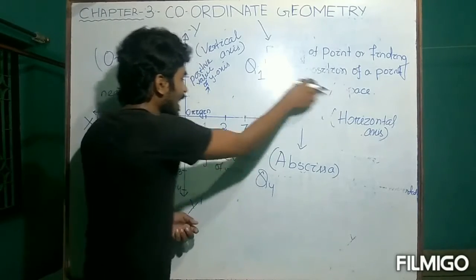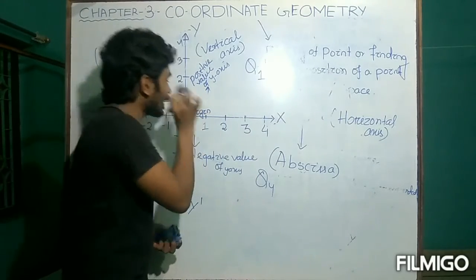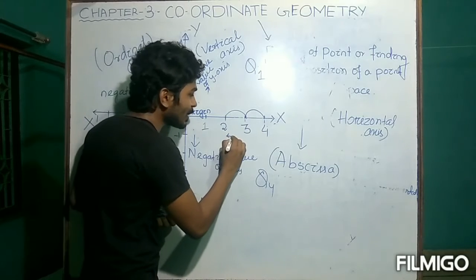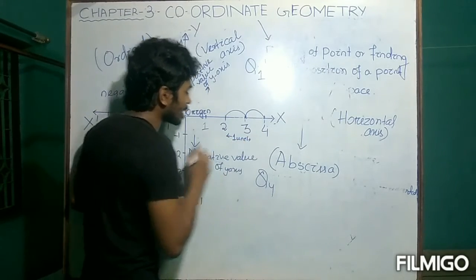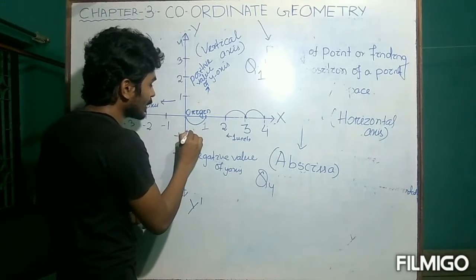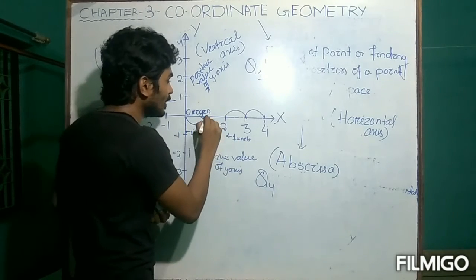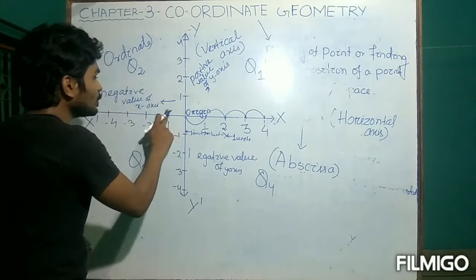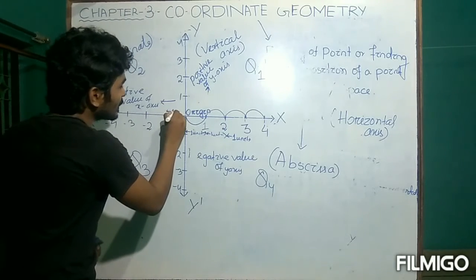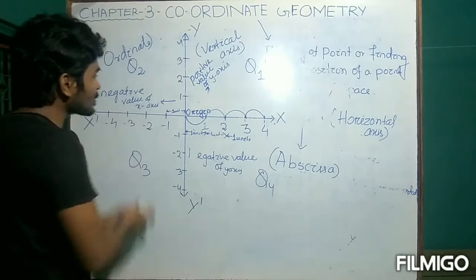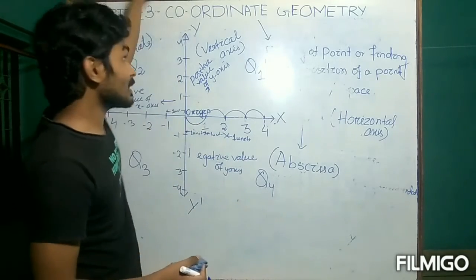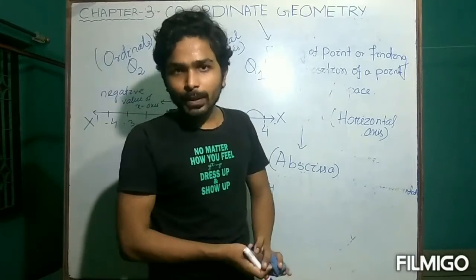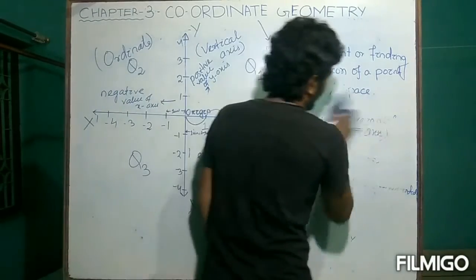The distance from 0 to 1 is always 1 unit. From 1 to 2 is also 1 unit. From 2 to 3 is also 1 unit. Similarly, the distance from 0 to minus 1 is 1 unit towards the left. From minus 1 to minus 2 is also 1 unit. The distance from 0 to 1 upward is also 1 unit, and from 0 to minus 1 downward is also 1 unit. This is the basic frame of reference known as the Cartesian coordinate system.